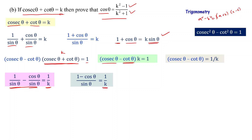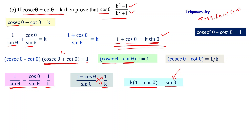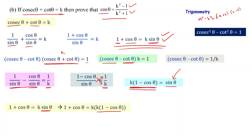Rearranging by cross multiplication: sin theta equals k times 1 minus cos theta. Now sin theta is expressed in terms of k and cos theta. Substituting this into the first equation — 1 plus cos theta equals k times sin theta — replace sin theta with k times 1 minus cos theta. So: 1 plus cos theta equals k times k times 1 minus cos theta.